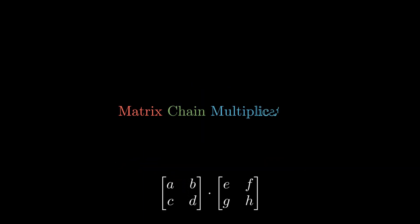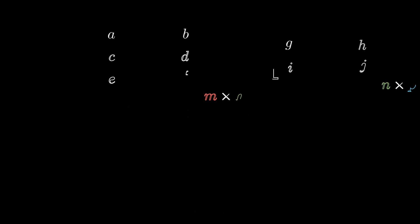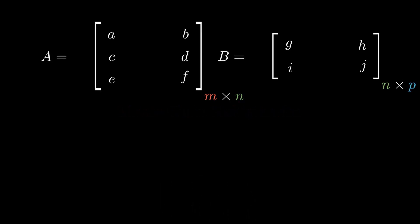Today's topic is matrix chain multiplication using dynamic programming. Given two matrices A and B of dimensions m×n and n×p respectively, the resultant matrix has dimension m×p. We want to find out what is the number of multiplications required to obtain the resultant matrix C.